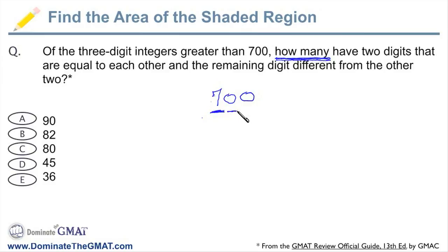The tens digit, which is that middle number, and then the units digit or the ones digit that is that final number. We're looking for ways that two of the digits are going to be the same and one digit is going to be different from each other.